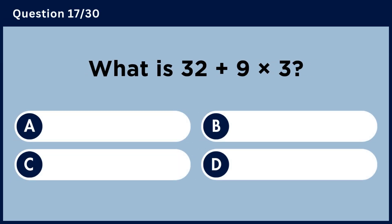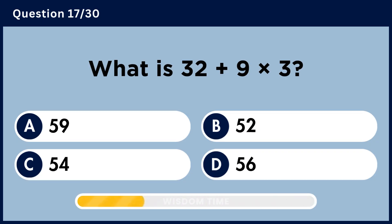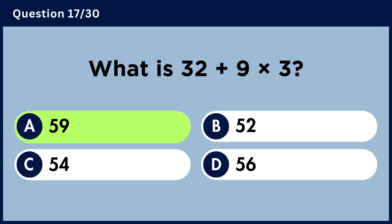What is 32 plus 9 multiplied by 3? Answer A, 59.